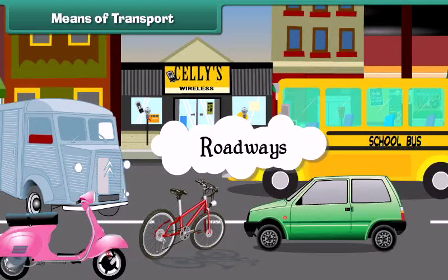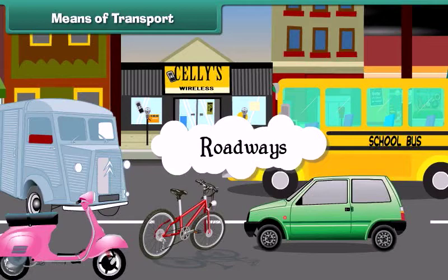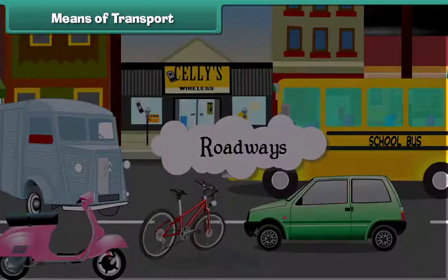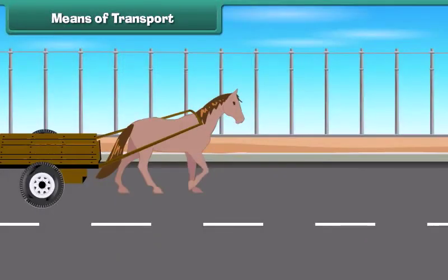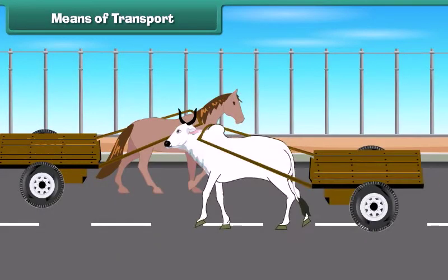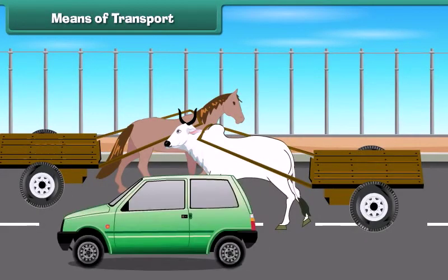What is meant by the term roadways? A roadway is a thoroughfare route or the way between two places which typically has been improved to allow travel by some conveyance, including a horse, a cart or a motorized vehicle.